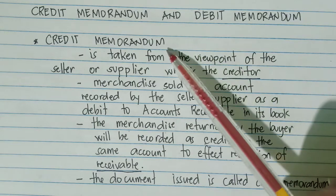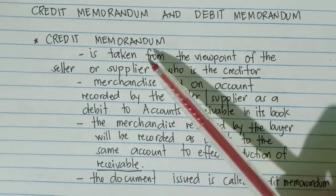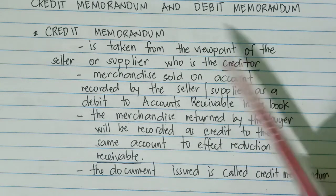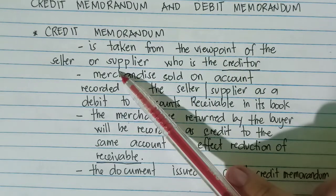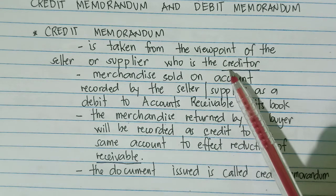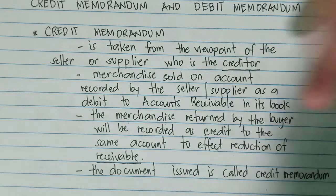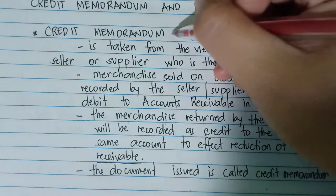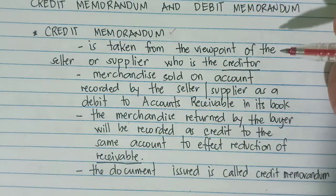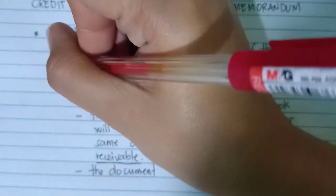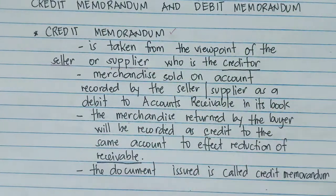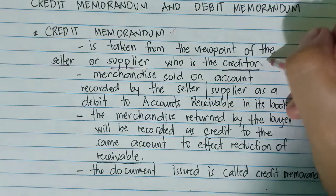When we say credit memorandum, it is taken from the viewpoint of the seller or supplier who is the creditor. Always remember that when we say credit memorandum, it is from the viewpoint of the seller or the supplier, and this seller or supplier is the creditor.